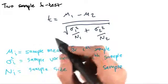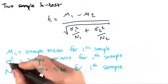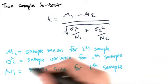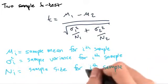Where mu i is the sample mean for the i-th sample, sigma squared i is the sample variance for the i-th sample, and n i is the sample size for the i-th sample.